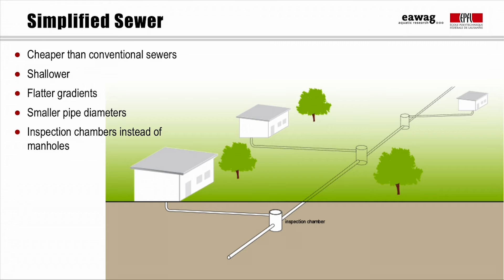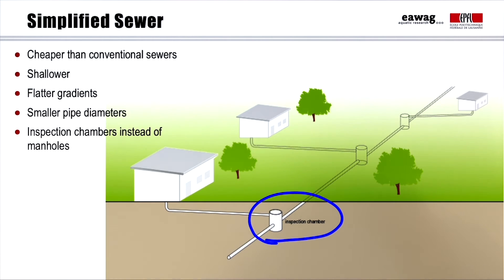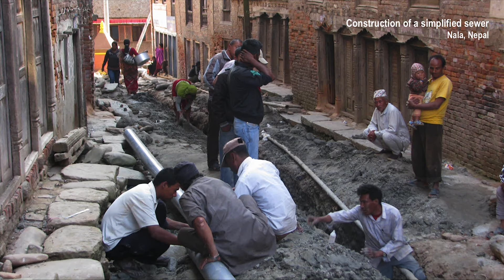Some of the main differences with conventional sewers are the minimum depth, which is about 30 cm instead of 80 cm; the minimum gradient, which is about 0.5% instead of 1%; and the minimum diameter of the pipes, which is about 100 mm instead of 200 to 300 mm. Another important difference is that expensive manholes are unnecessary — instead, simple inspection chambers or clean-outs are sufficient, and inspection boxes are built for each house connection. The drawback of the lower gradient and diameter is that repairs and removal of blockages are more frequent, but this can be done easily by locals at little cost.